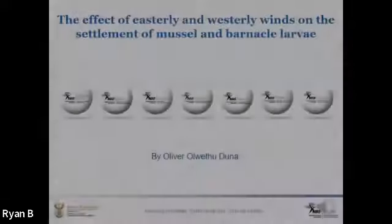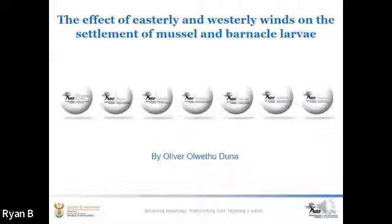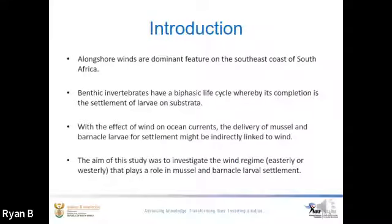Our next presenter is Oliva Olochiduna, who is a PhD student. Ladies and gentlemen, I will be talking to you about the effect of easterly and westerly winds on the settlement of mussel and barnacle larvae. Alongshore winds are dominant on the southeast coast of South Africa and potentially have an impact on the ocean currents and organisms found in the ocean. Organisms such as mussels and barnacles have a biphasic life cycle whereby the larvae are found in the ocean and have to return to the shore for settlement.